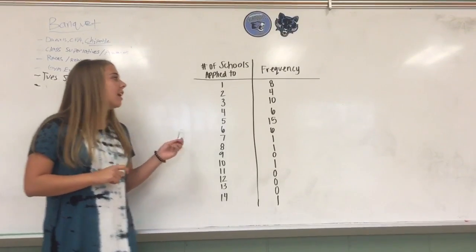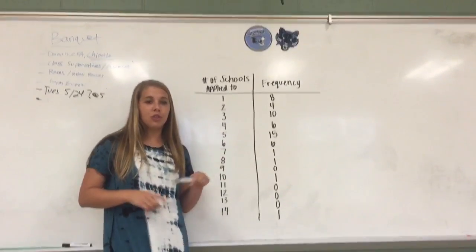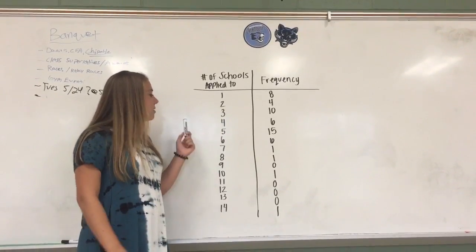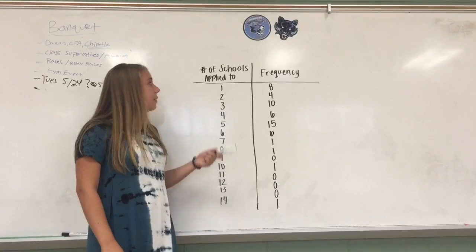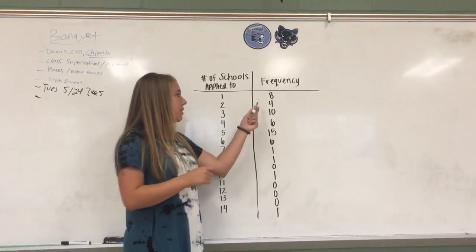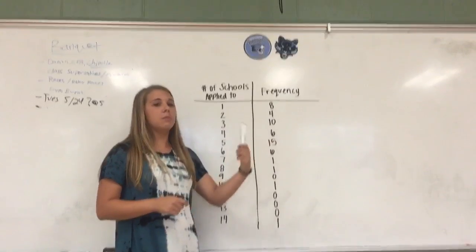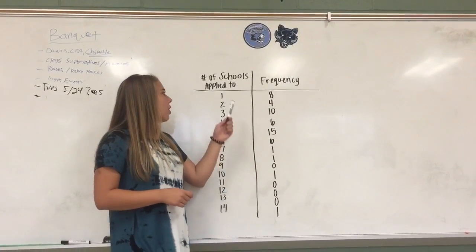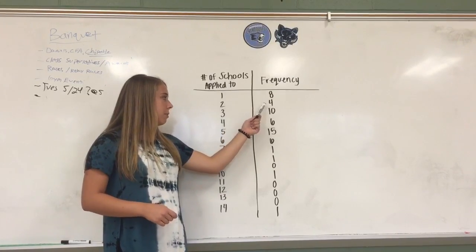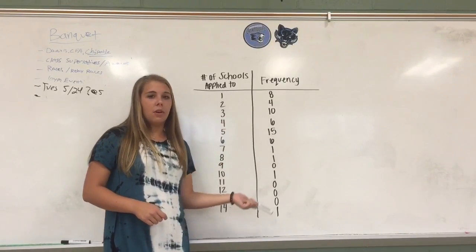I've got Devon here again, and I wanted to show you the frequency distribution graph that we made. This side represents all of the data points that we got for the number of possible schools people applied to, and then on this side, we wrote how many times somebody had answered that. So 8 people said that they had applied to one school, and 4 people said that they had applied to two, and so on and so forth.